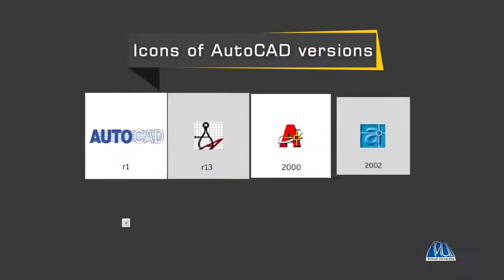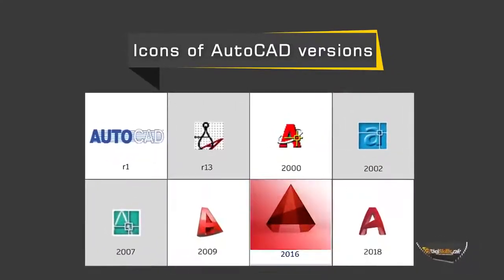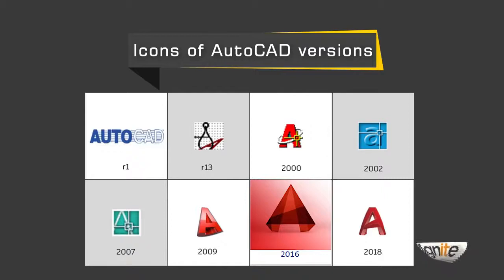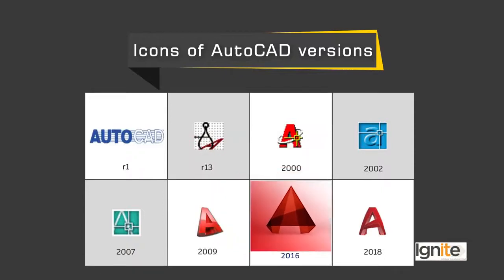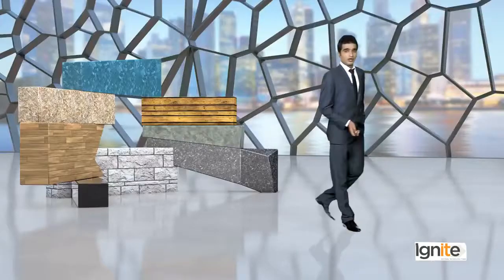We can see different icons. With the passage of time, right from 1982 till now, one by one products have been released, each with different icons. This is how the software has evolved. In 2016, the version we are going to use has its own icon. The latest 2018 icons are also available.